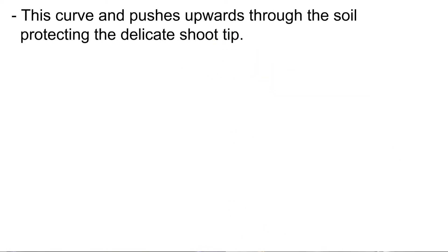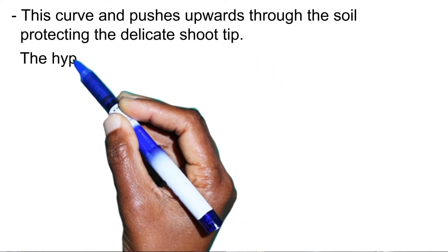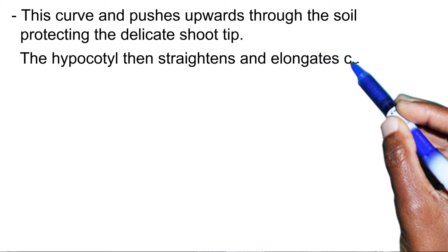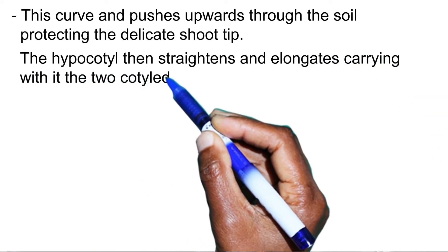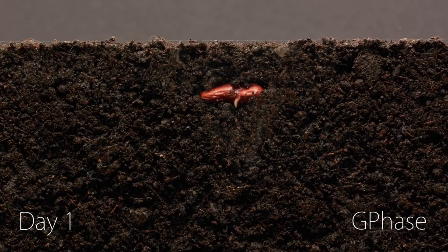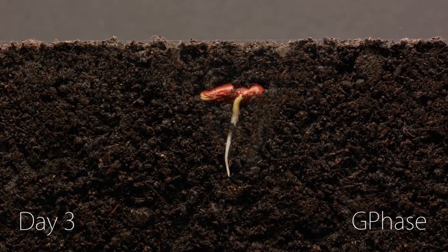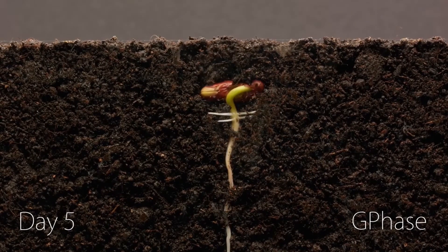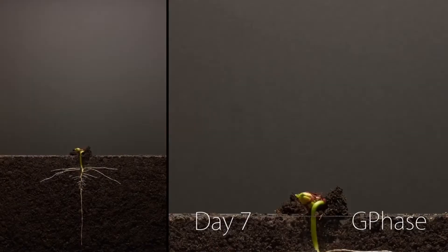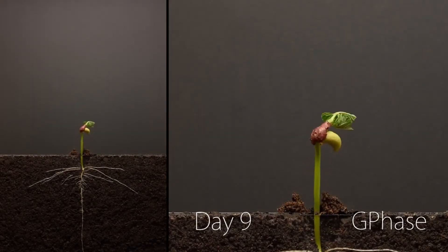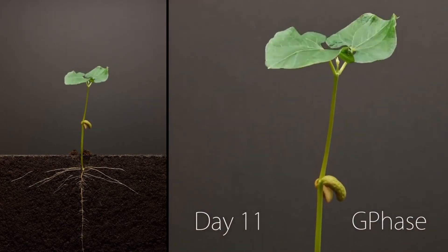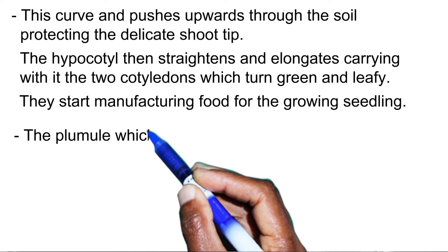Students, note this: the hypocotyl then straightens and elongates, carrying with it the two cotyledons, which then turn green and leafy and aid the plant in manufacturing food for the growing seedling.